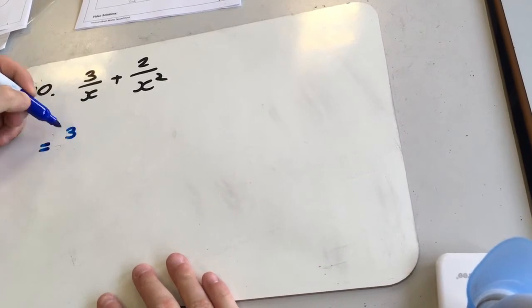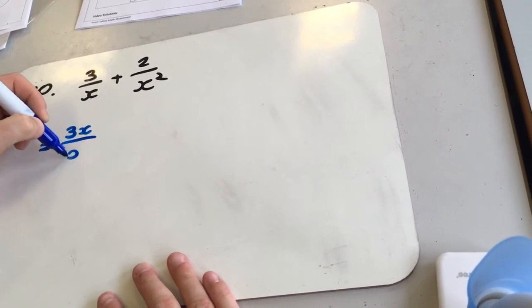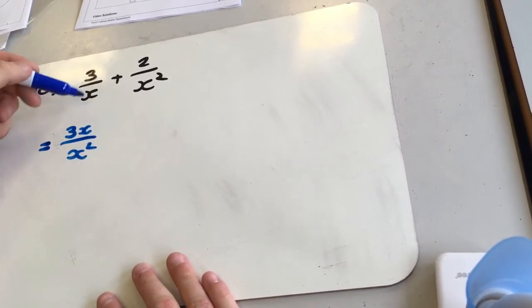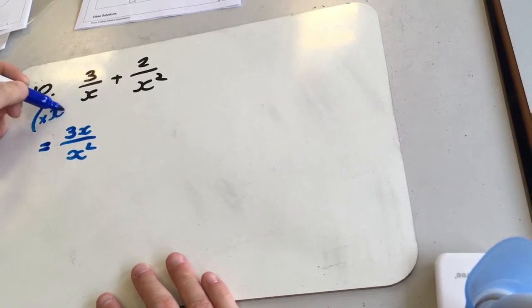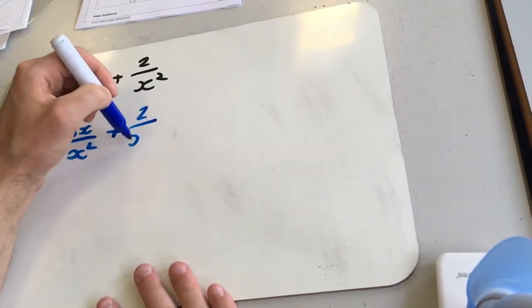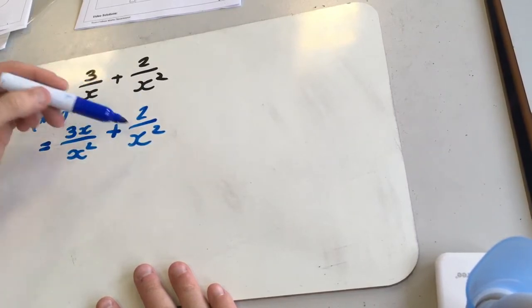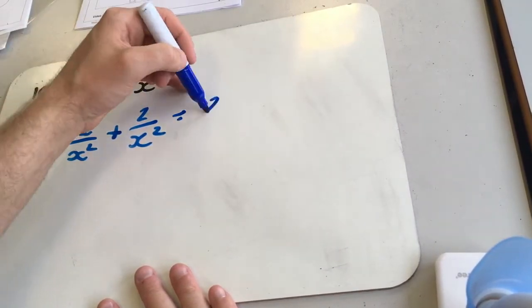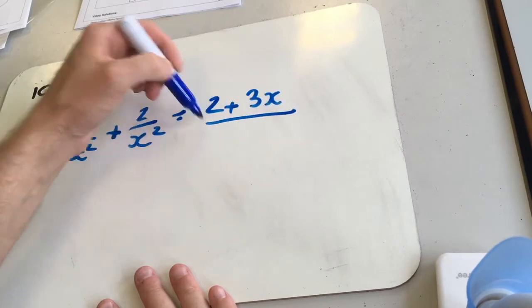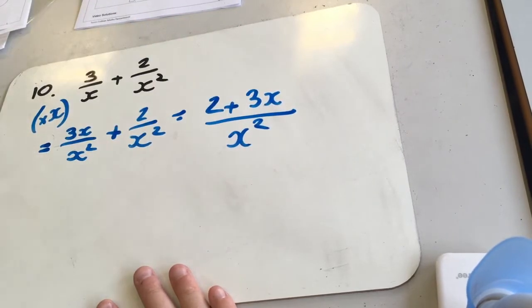So we're going to have 3x over x squared, because I've times this one by x. Sorry, times by x. Added to 2 over x squared. Now we can add the tops, so we get 2 plus 3x over x squared.